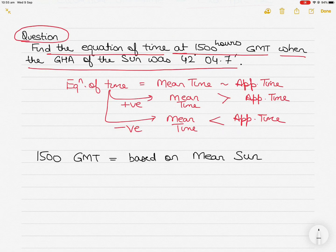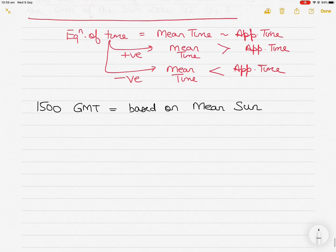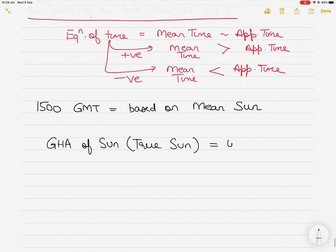If the mean time is more, then the equation of time will be positive; if it is lesser than the apparent time, it will be negative. To find the time based on the true sun, we have been given the GHA of the sun — and when I say GHA of the sun, we mean the true sun, the sun we see in the sky. That GHA is equal to 42 degrees 04.7 minutes.